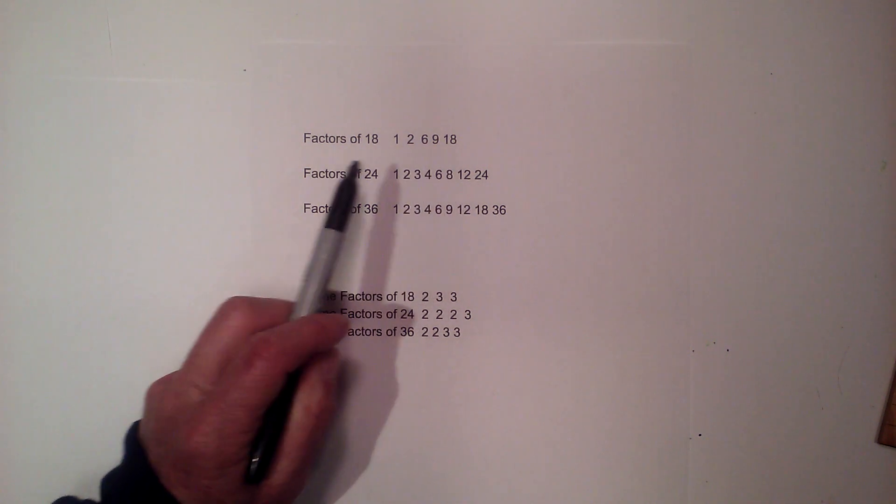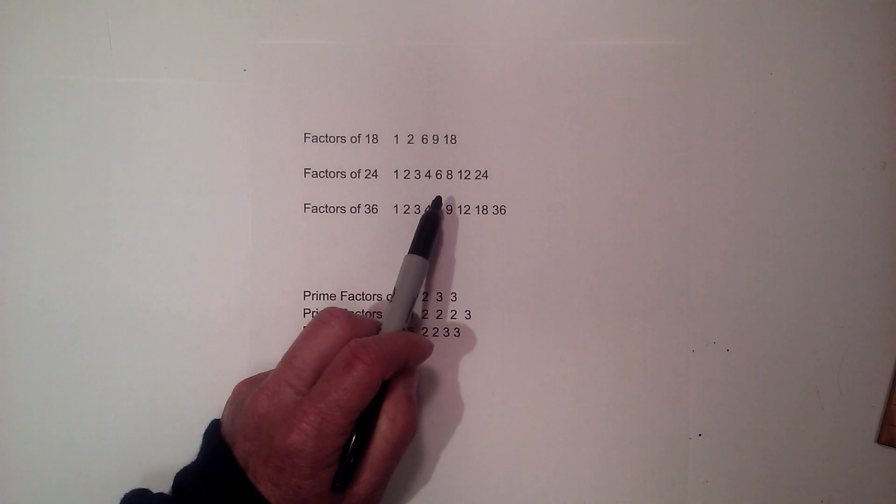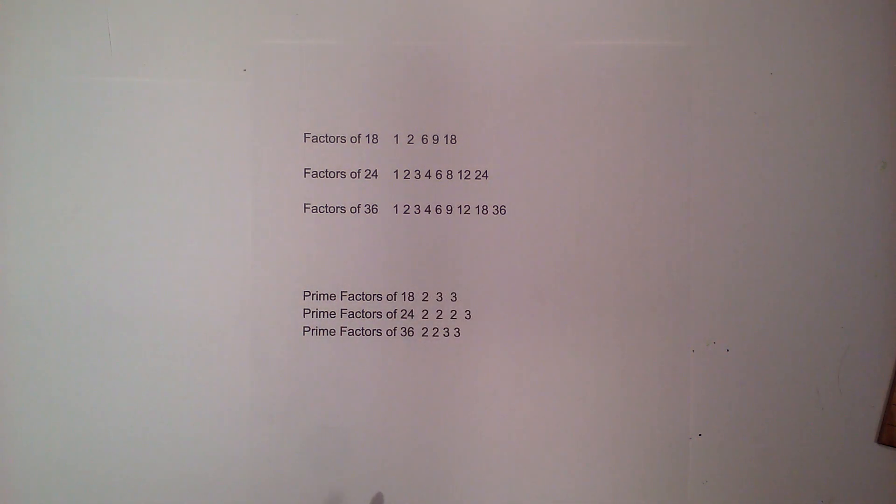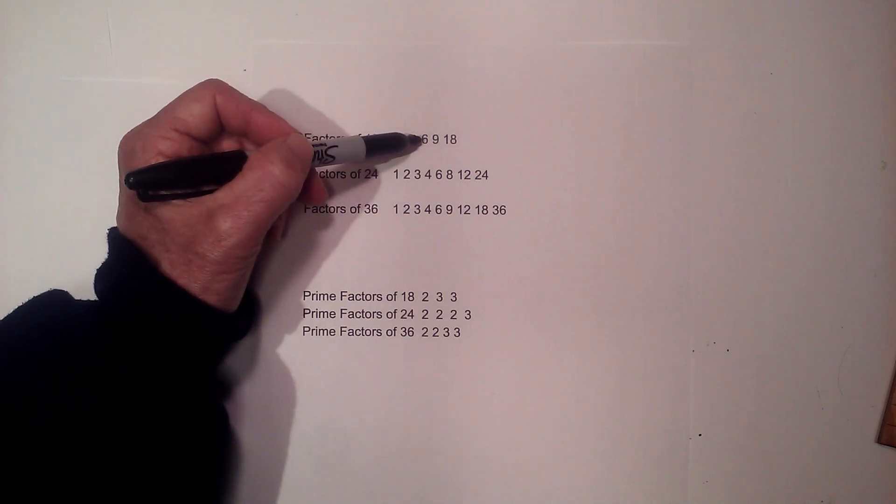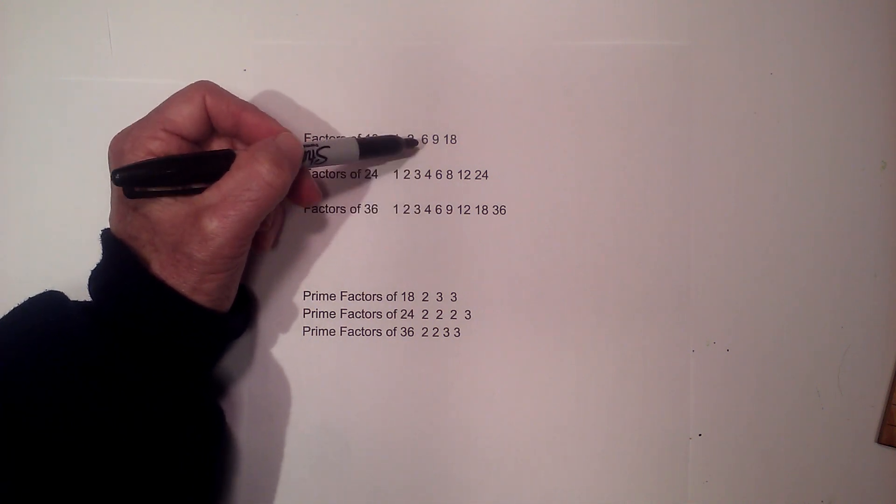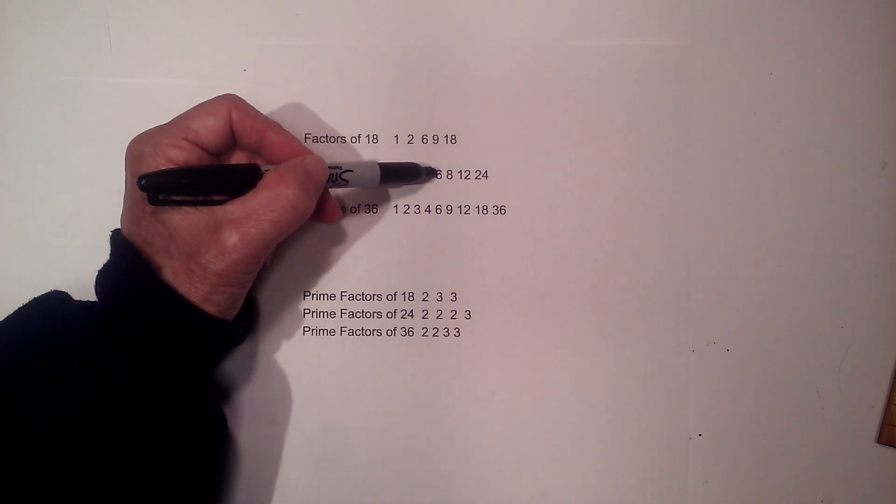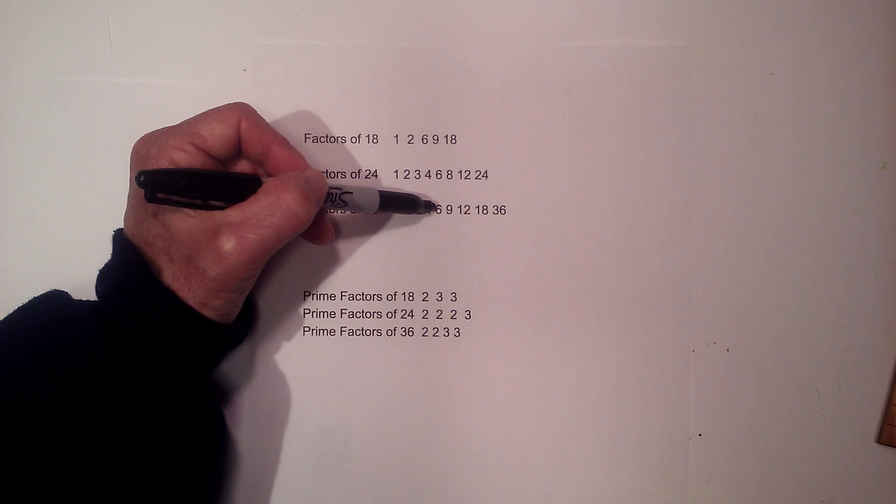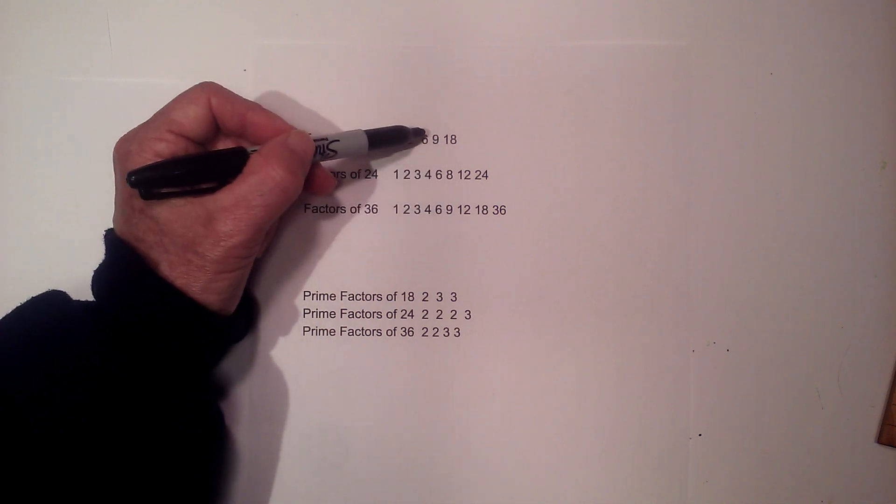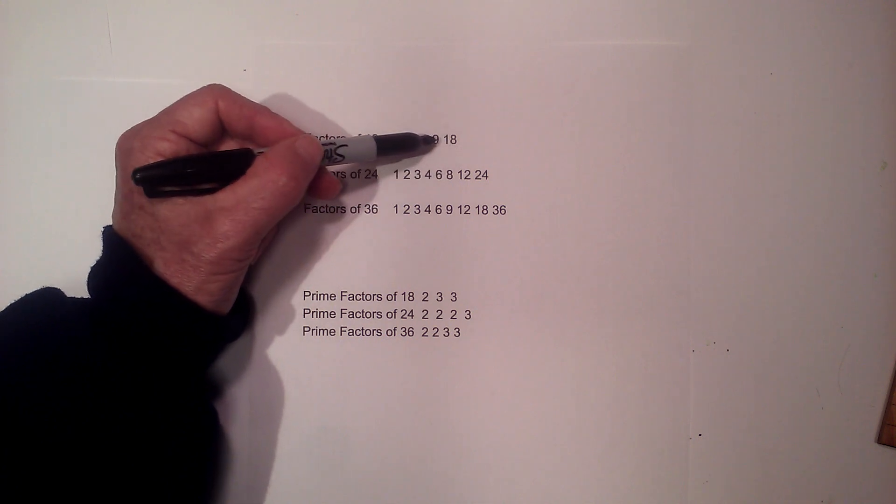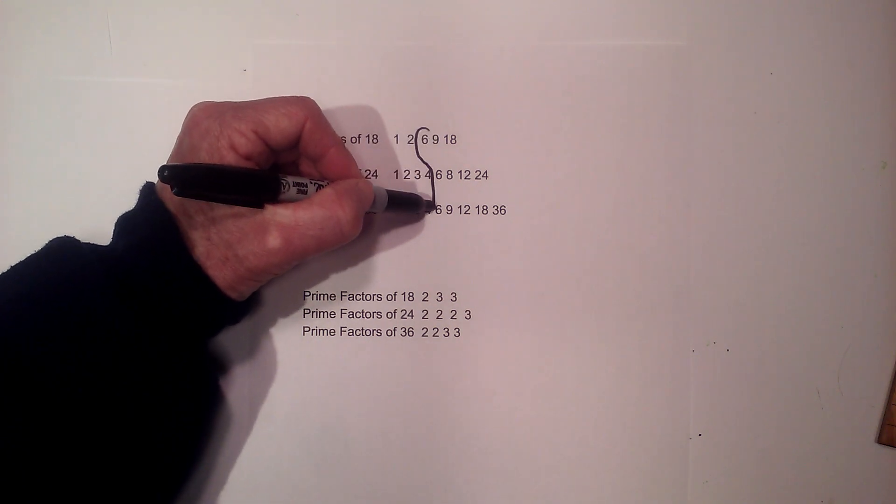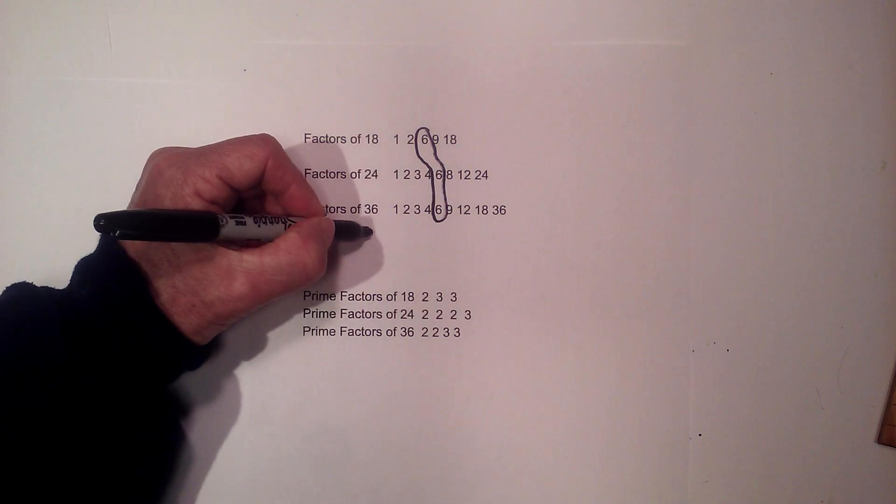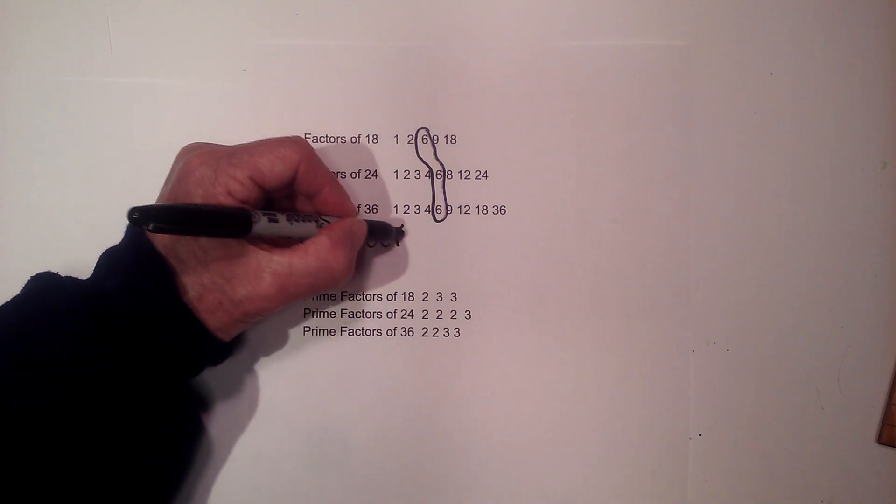So again I look for numbers that are found on each list. The largest number: one is, two is. Now three - no, it's on this list and this list but not here. Six is here, here, and here so six can be a candidate. Nine is not found, it's found on two of them. Eight is only found on one. Eighteen is found on two. So we've run out of numbers so six is the largest number. So the GCF of these three numbers 18, 24, 36 equals 6.